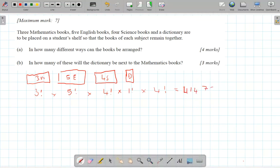Now, the next one wants the dictionary next to the maths. So what I'm going to do is I'm going to have the three maths books and the one dictionary together like this. But I'm not shuffling the dictionary in amongst the maths books.